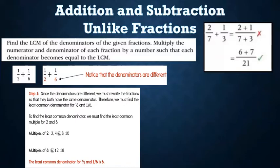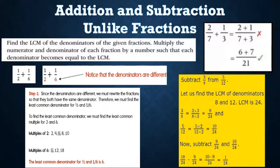Now let us find an example for subtraction of unlike fractions: subtract 3/8 from 5/12. First we find the LCM of the denominators 8 and 12, which is 24. So 3/8 becomes (3×3)/(8×3) = 9/24, and 5/12 becomes (5×2)/(12×2) = 10/24. Therefore, 10/24 - 9/24 = 1/24.